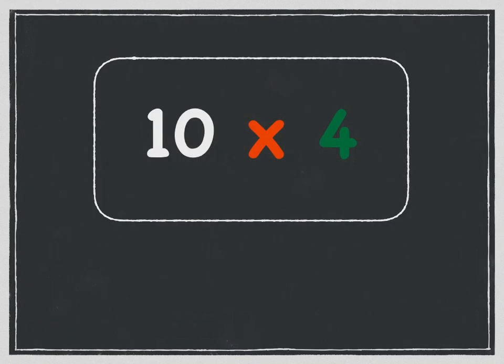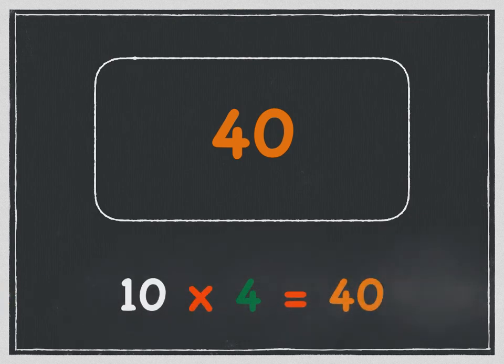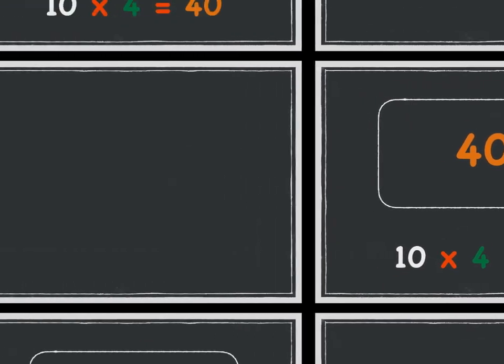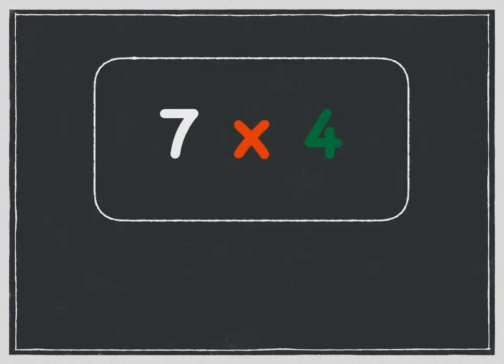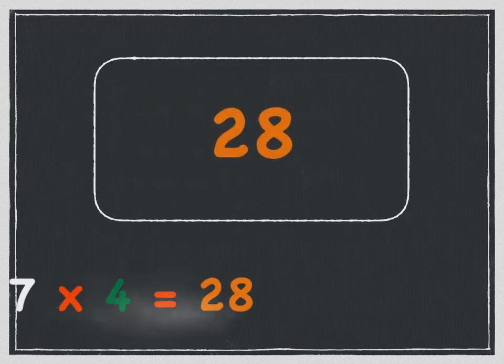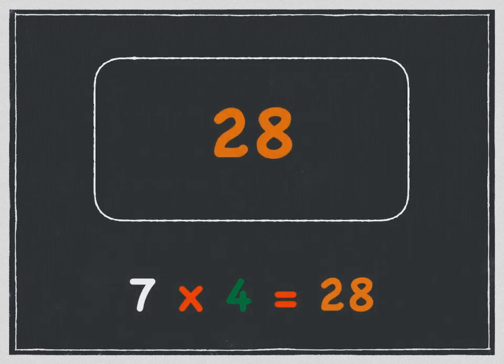Ten times four is forty. Ten times four is forty. Seven times four is twenty-eight. Seven times four is twenty-eight.